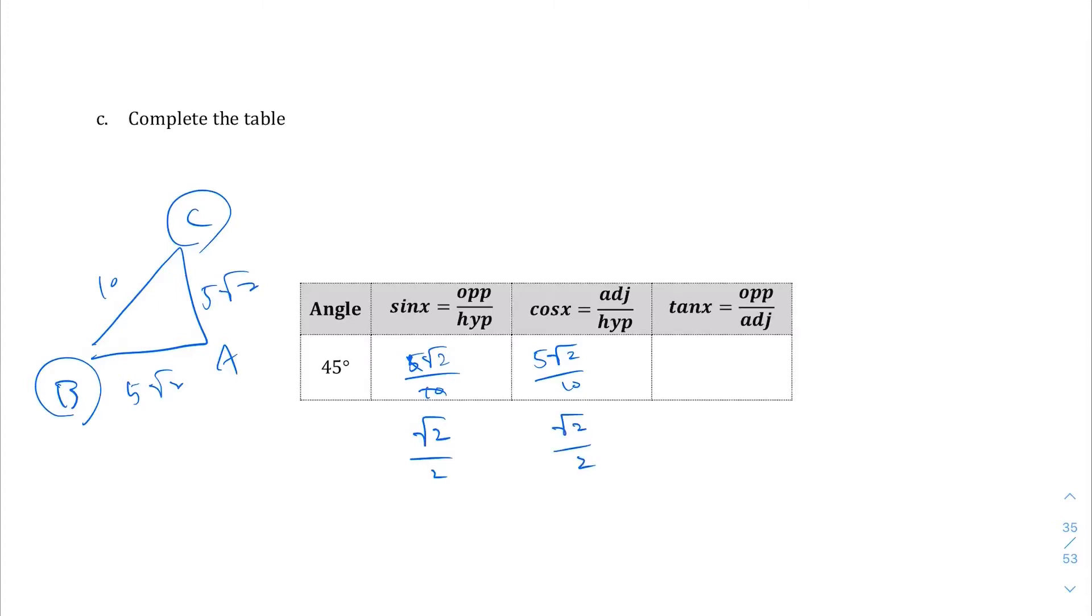Lastly, the tangent of x is opposite over adjacent, which in this case is going to be 5√2 over 5√2 no matter which angle you take, and that simplifies to 1.